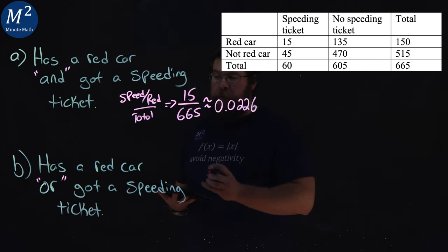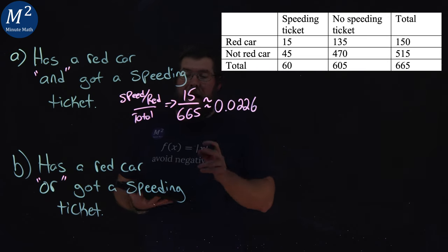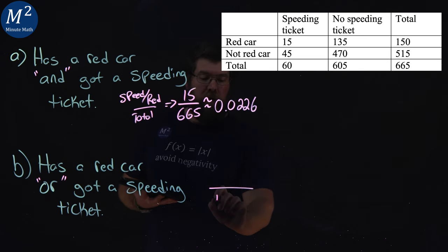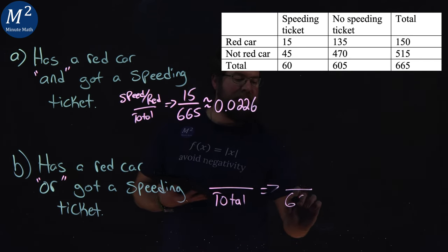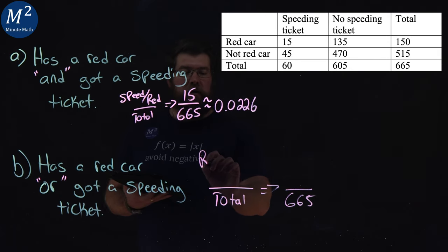Let's look at part B now. Probability that has a red car or got a speeding ticket. Our total here is still the same, and that's going to be 665 people. We need a red car or speeding ticket.